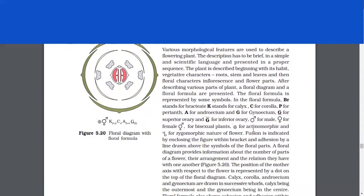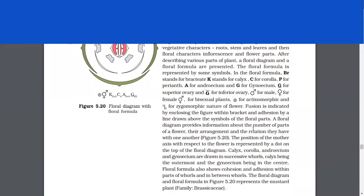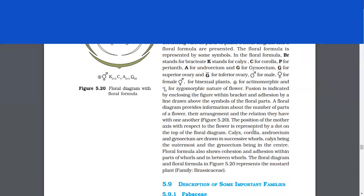The floral formula is represented by some symbols. Br stands for bracteate, K stands for calyx, C stands for corolla, P for perianth, A for androecium, G for gynoecium. G with a bar underlined for superior ovary and G with a bar upside for inferior ovary. Then male and female symbols, they are for bisexual plants and a plus enclosed in a circle for actinomorphic and percentage for zygomorphic nature of flower. Fusion is indicated by enclosing the figure within bracket and adnation by a line drawn above the symbols of the floral parts. A floral diagram provides information about the number of parts of a flower, their arrangement and the relation they have with one another. Position of the mother axis with respect to the flower is represented by a dot on the top of the floral diagram.